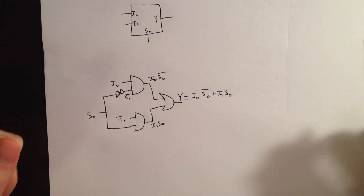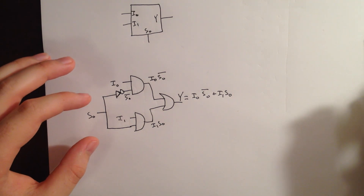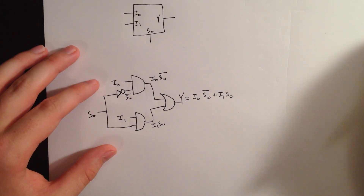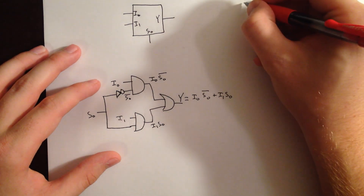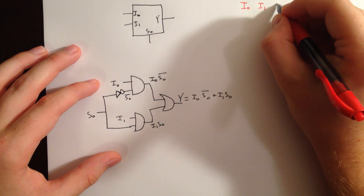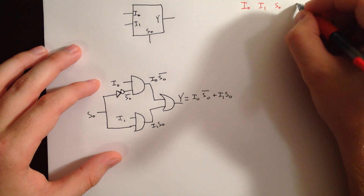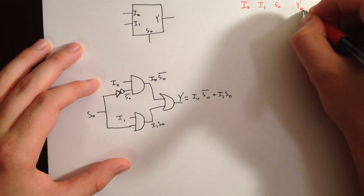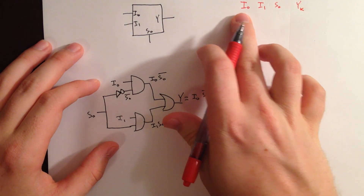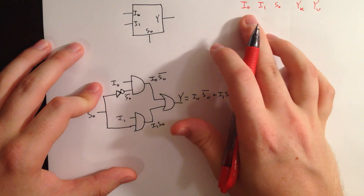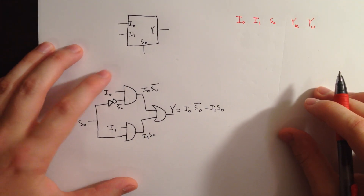And let's go ahead and build a truth table for this. I'm going to do the truth table a little bit differently. I'm going to use red so I can use black to cover up some things. So we have our inputs I0, I1, and S0, and then we'll have our output Y. I'll call this YK for our known values of I0 and I1, and YU for our unknown values of I0 and I1.